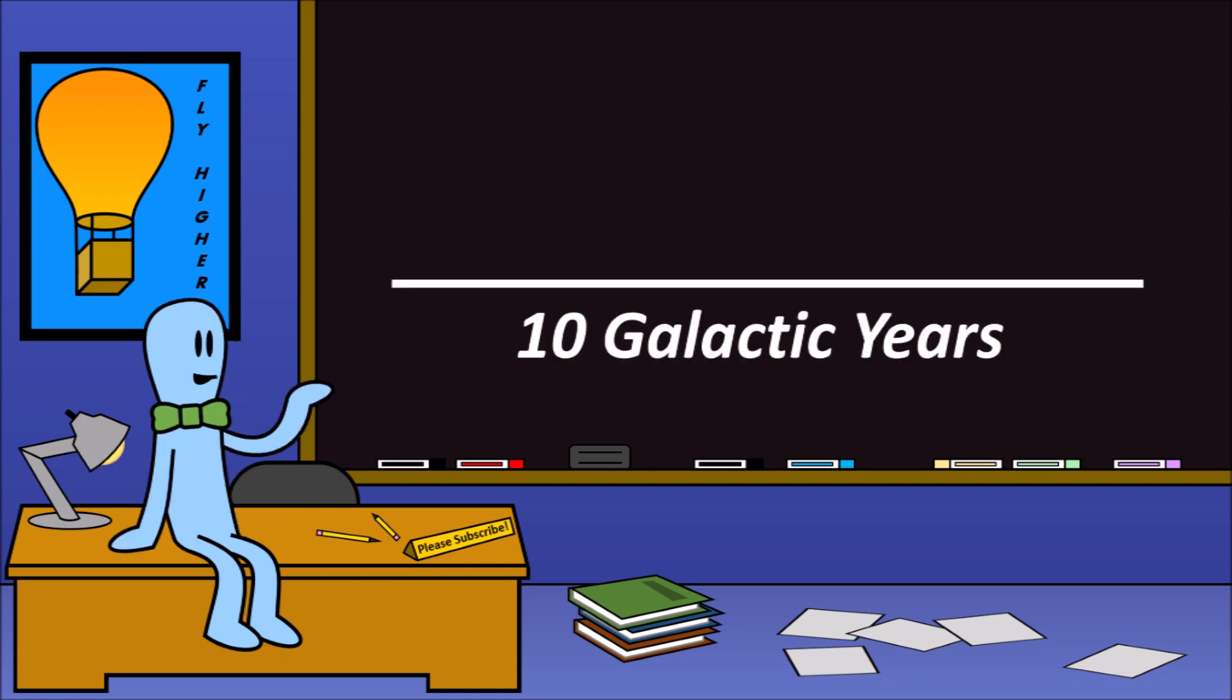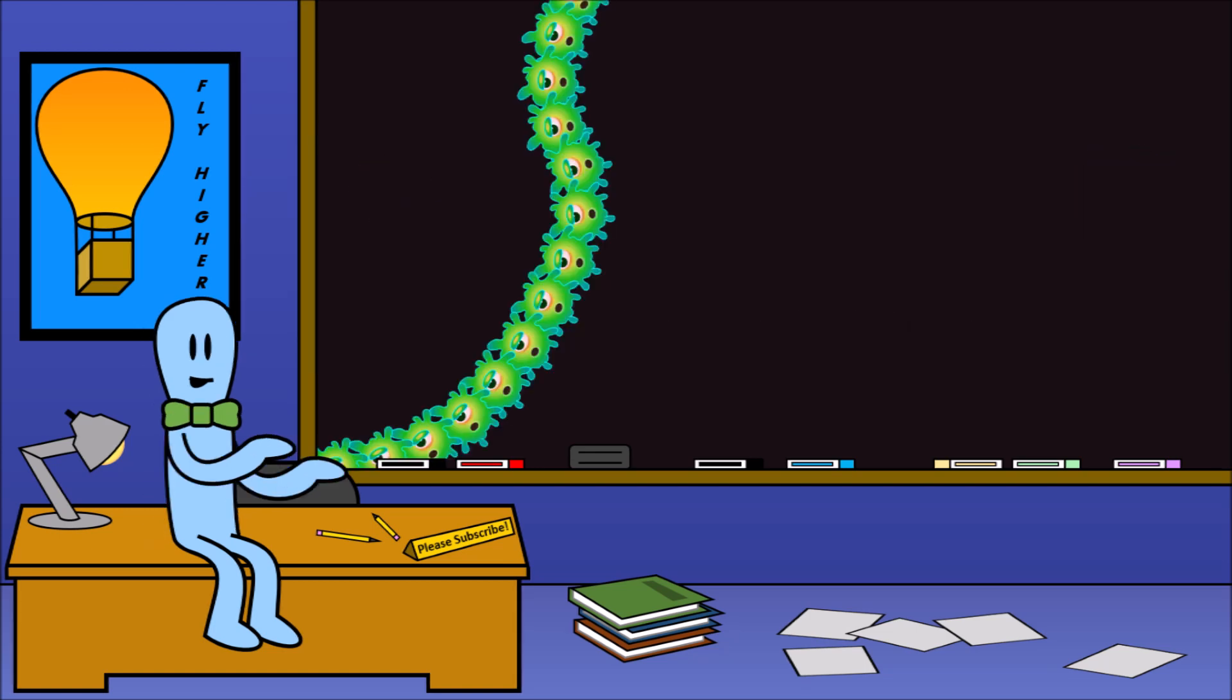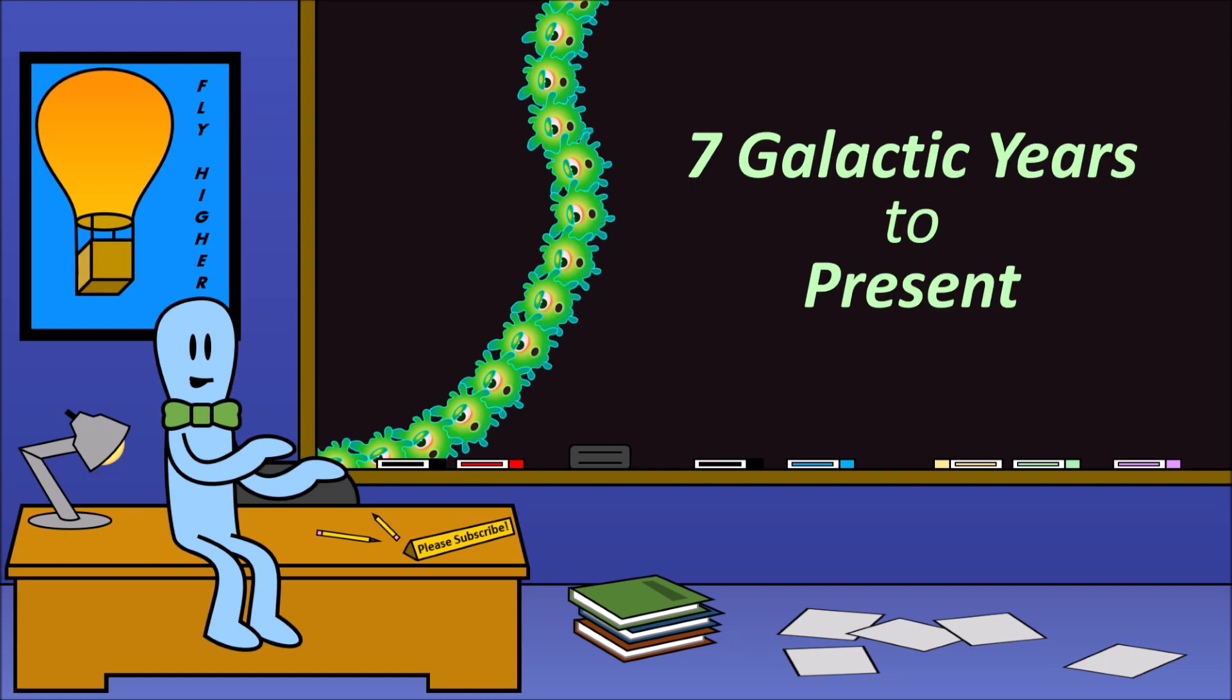It took 10 whole galactic years from the time the first life showed up on earth to the first multicellular organism. Multi-celled organisms have only existed on earth for the last 7 galactic years. Life on earth has been single-celled for over half of its existence. That's insane.